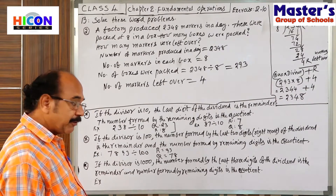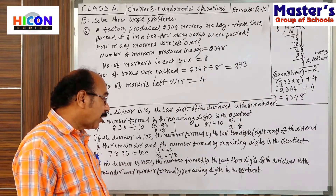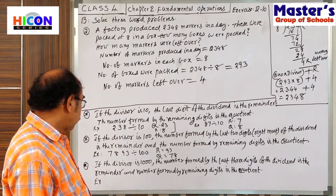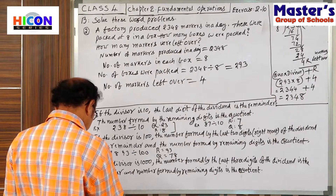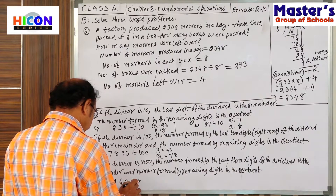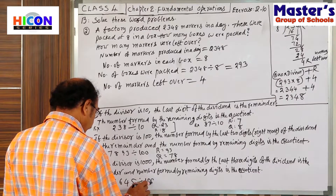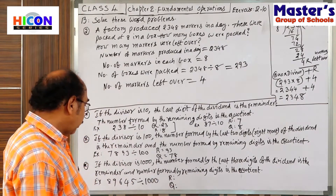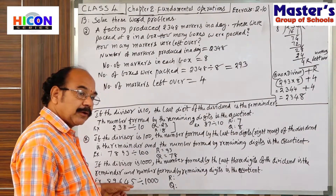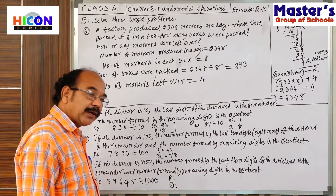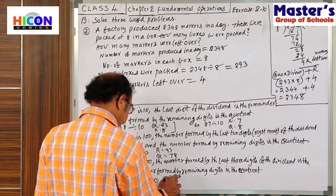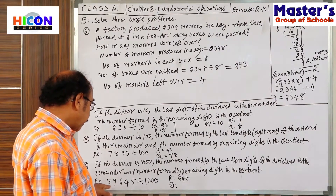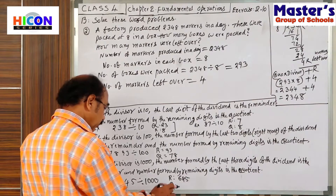If the divisor is 1000, the number formed by the last 3 digits of the dividend is the remainder, and the number formed by the remaining digits is the quotient. For example, 89,645 divided by 1000. What are the remaining digits? This is 89. So, 89 is the quotient.